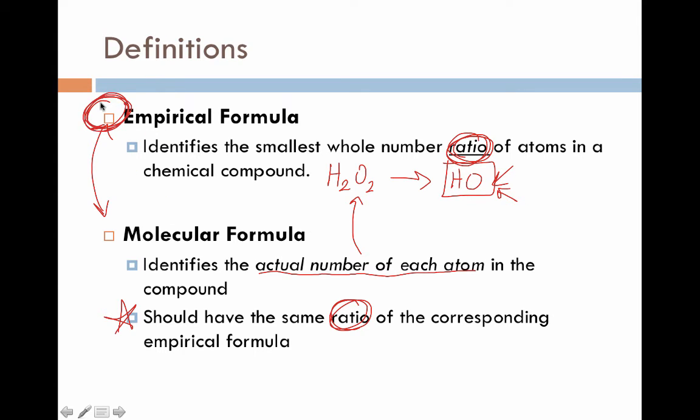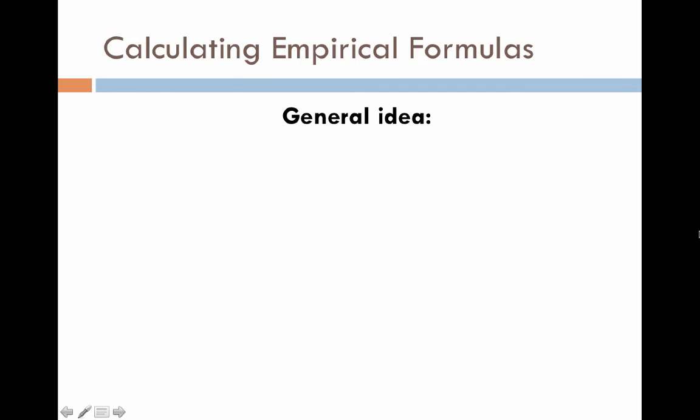These two are definitely linked together, and we'll talk about that connection a little later on. Today, we're only talking about how to calculate the empirical formula. We'll talk about the molecular formula in a separate video. So our last piece of the puzzle is actually calculating empirical formulas. As opposed to coming up with a detailed list of things to do, I'm going to explain the philosophy or the idea behind what we're trying to accomplish, and then we'll make that idea more tangible by doing an example problem.